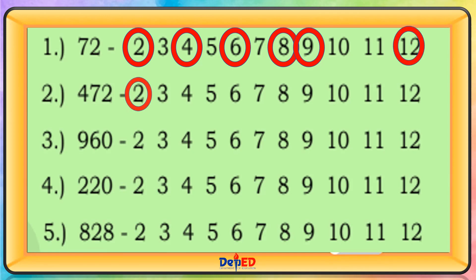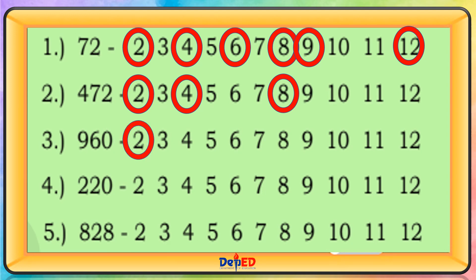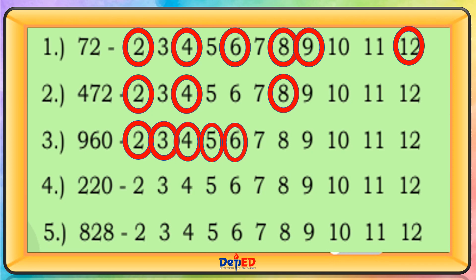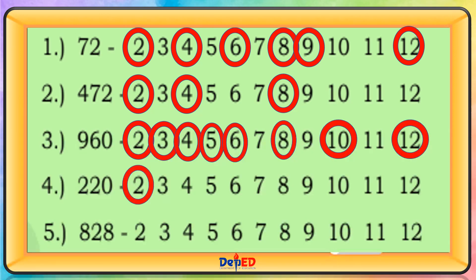472: multiples are 2, 4, and 8. 960: multiples are 2, 3, 4, 5, 6, 8, 10, 12. 220: multiples are 2, 4, 5, 10, 11.